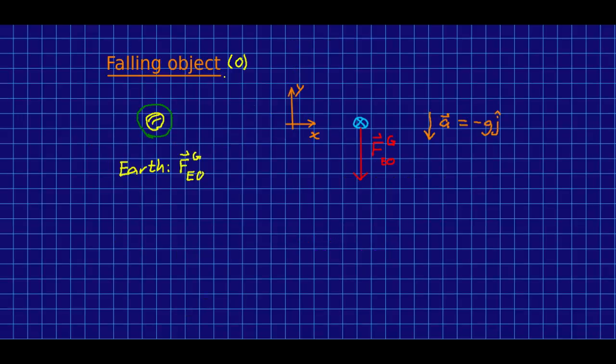So now let's think about a falling object, O. It's not touching anything except the air. And as long as it's not moving too fast, the forces that the air exerts on it are small and we can ignore them. So the only force on our free body diagram is the gravitational force due to the earth. And what's more, we know that the acceleration of this object is just g down. And so our equation of motion looks like this.